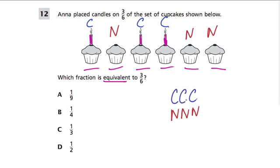And you can see it here, right? The whole group, three out of six are C, or three of them have candles, six of them out of the six that we have, and three of them do not.